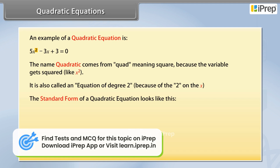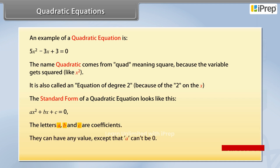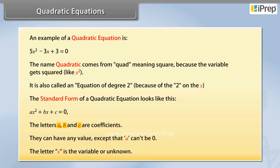The standard form of a quadratic equation looks like this: ax² + bx + c = 0. The letters a, b, and c are coefficients. They can have any value, except that a cannot be 0. The letter x is the variable or unknown.